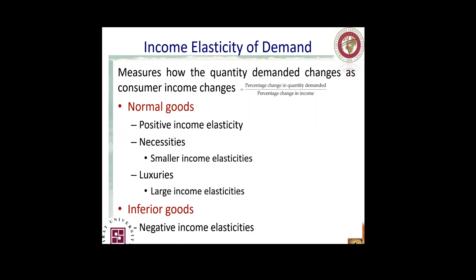Normal goods themselves have two types: necessities and luxuries. Necessities are things we cannot give up — food is a good example — but we can give up luxuries like going on a vacation, buying diamonds, or ornamental gold. Luxuries are actually more elastic than necessities. Necessities don't show as much elasticity based on income changes, but luxuries show higher income elasticity: the more income you have the more luxuries you consume.